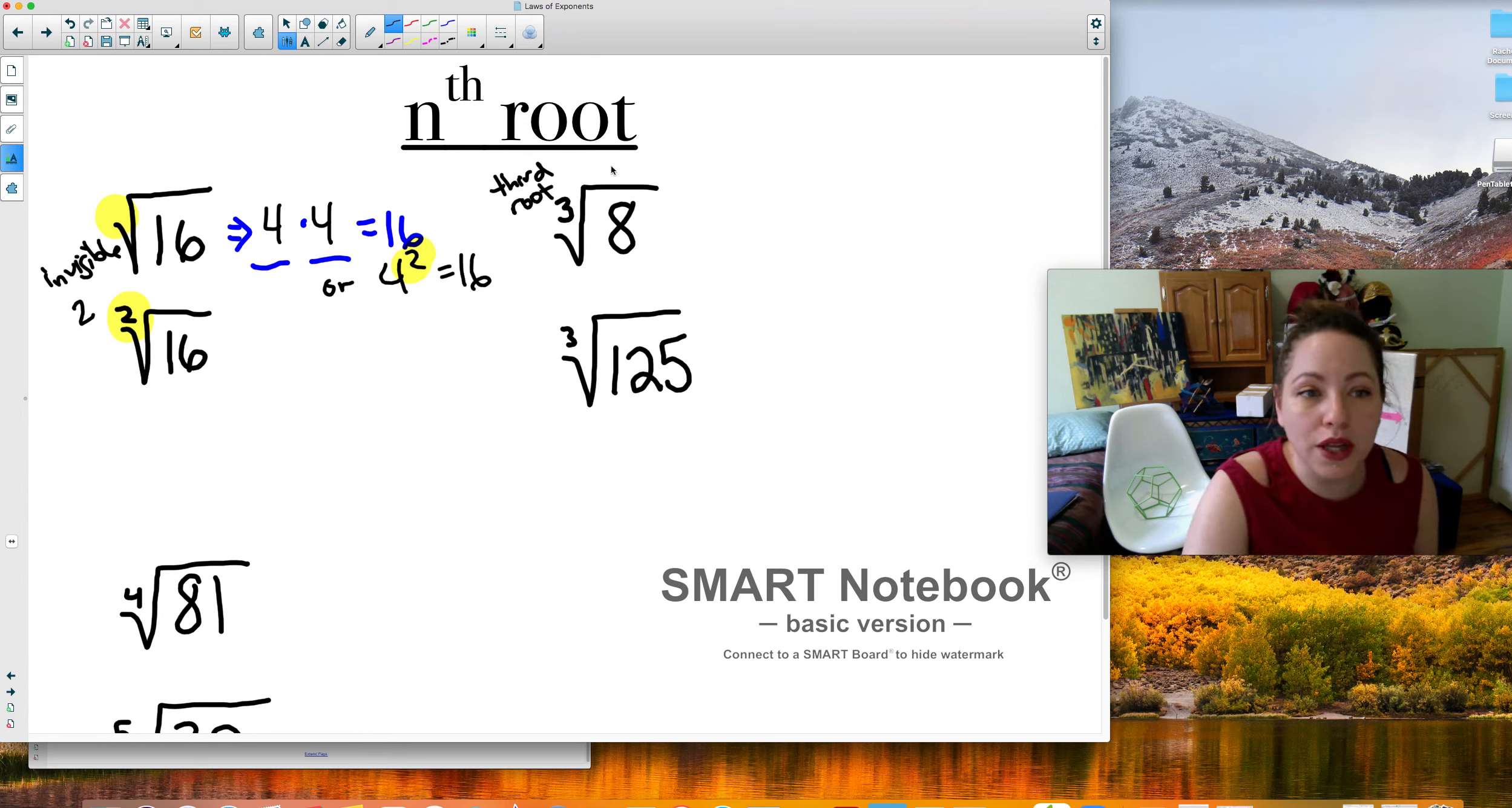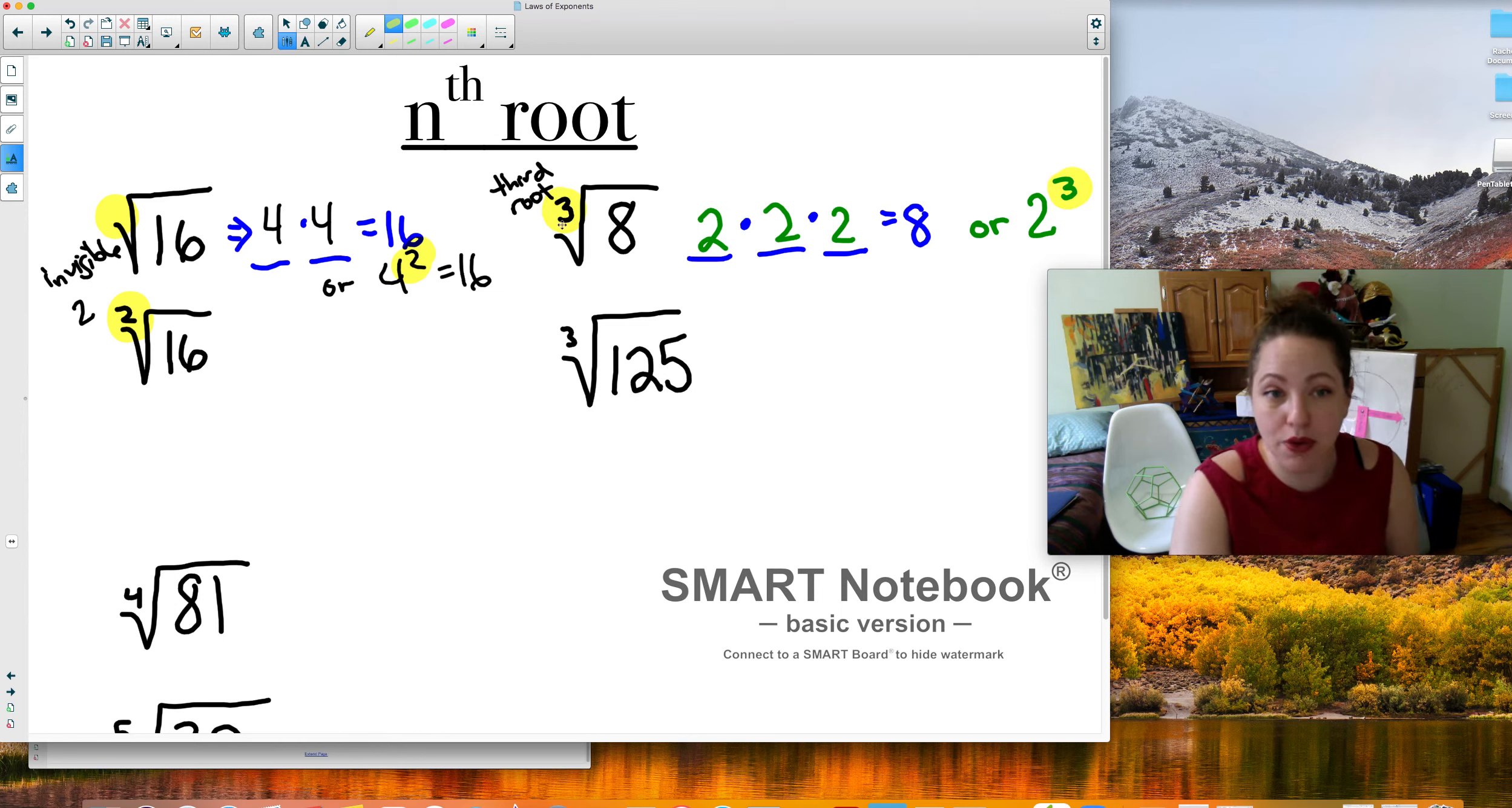And so what it really means is what number times itself 3 times equals 8. So you take a second with your calculator, what is that number? 2. 2 times 2 times 2, or 2 to the third power. The exponent is the same as the root. So these are like opposites. Exponent and roots are opposites of each other. So this cube root of 8 is equal to 2 because 2 to the third is equal to 8.